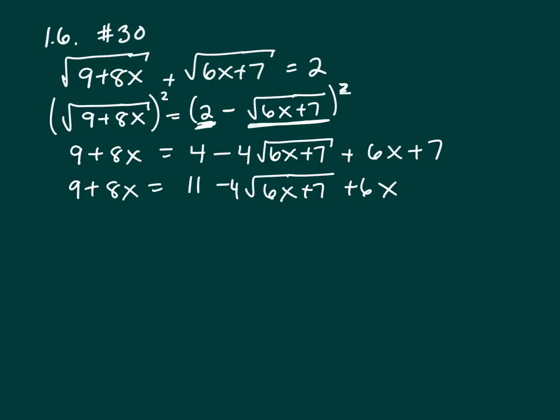Let me see, subtract 6x from both sides. That will give me a 2x. And now let's subtract 11 from both sides. That gives me a minus 2. And that leaves me a negative 4 square roots of 6x plus 7.